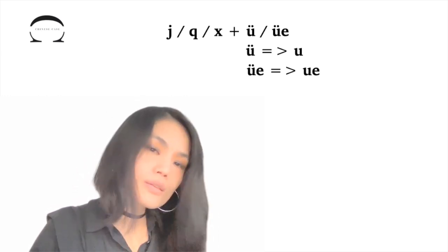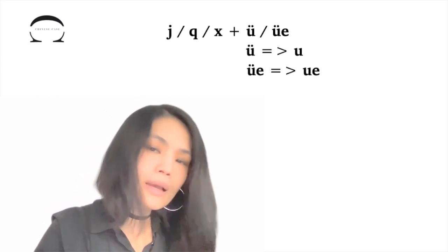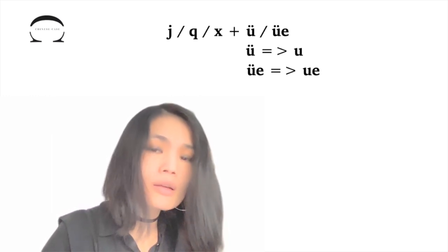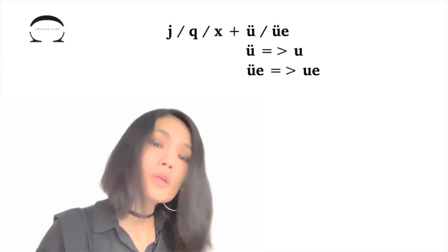This means for us, every time we see a letter u behind J, Q, or X, we need to train our brain to transform it back to the original letter ü, the one with the two dots.